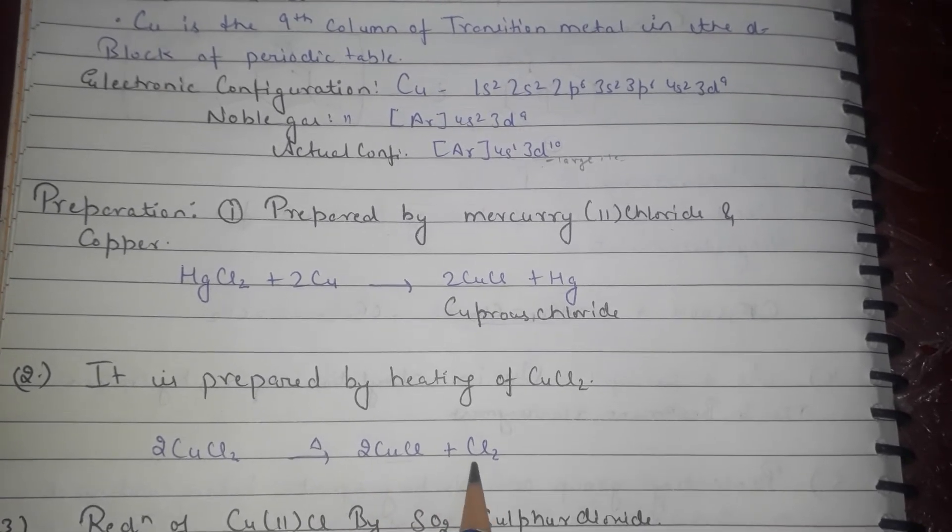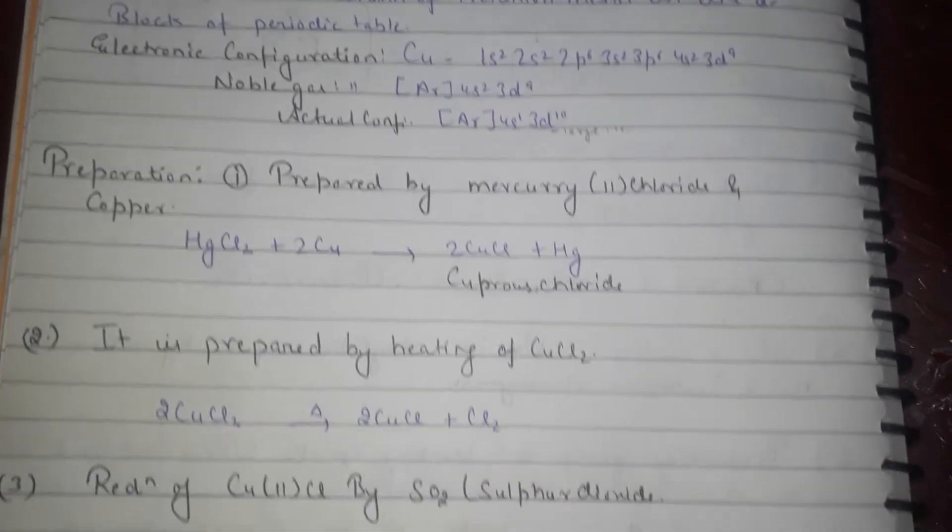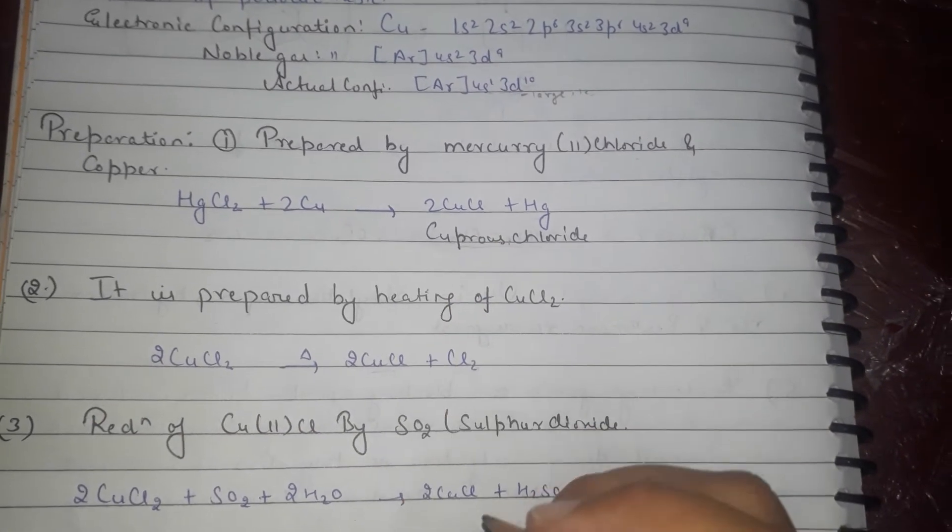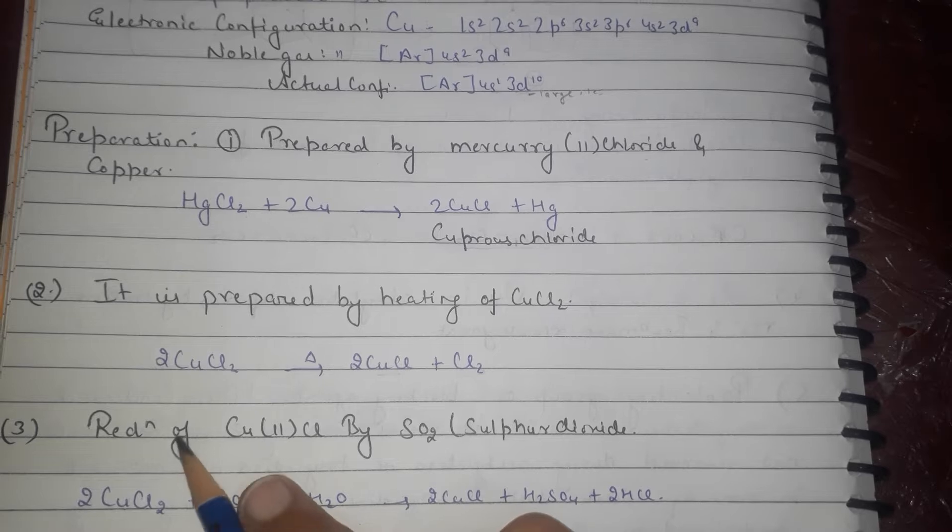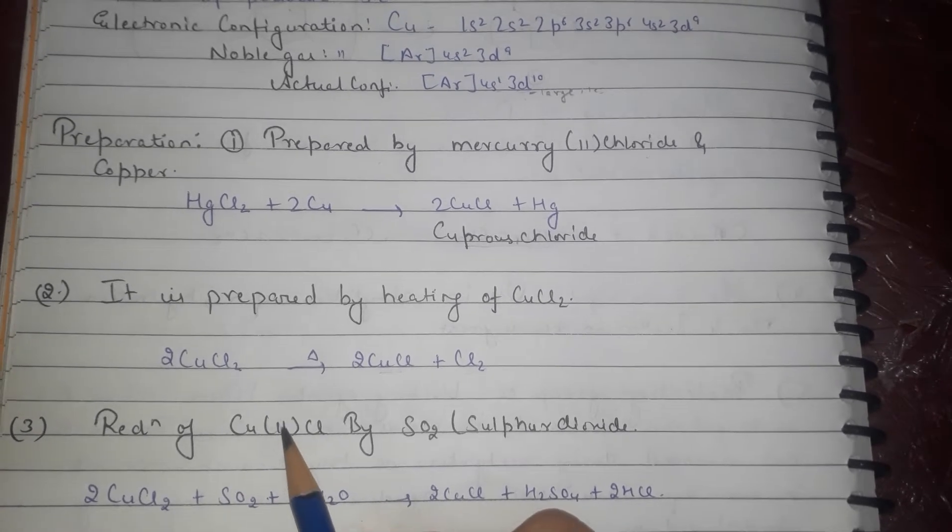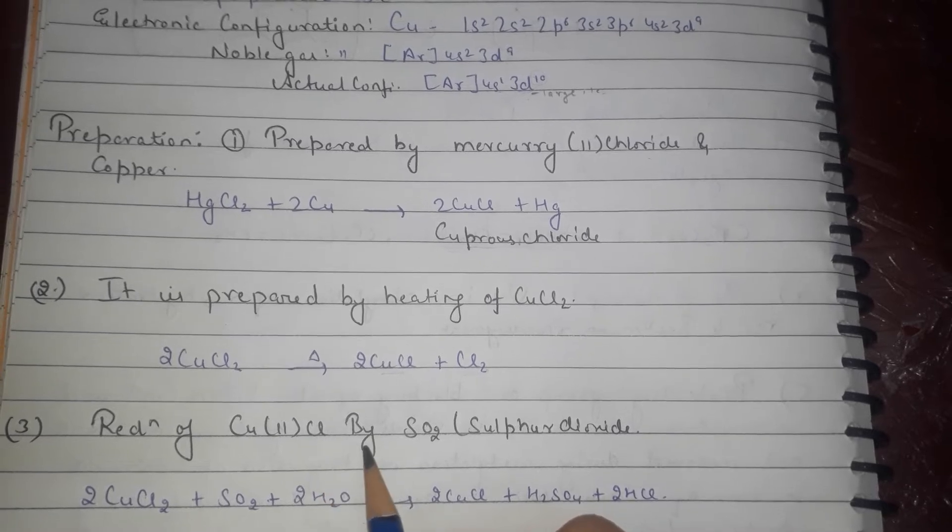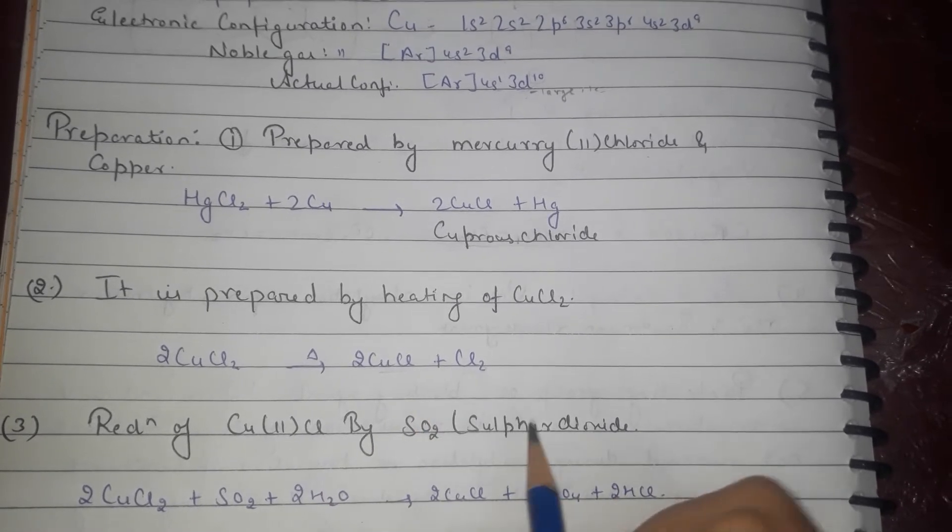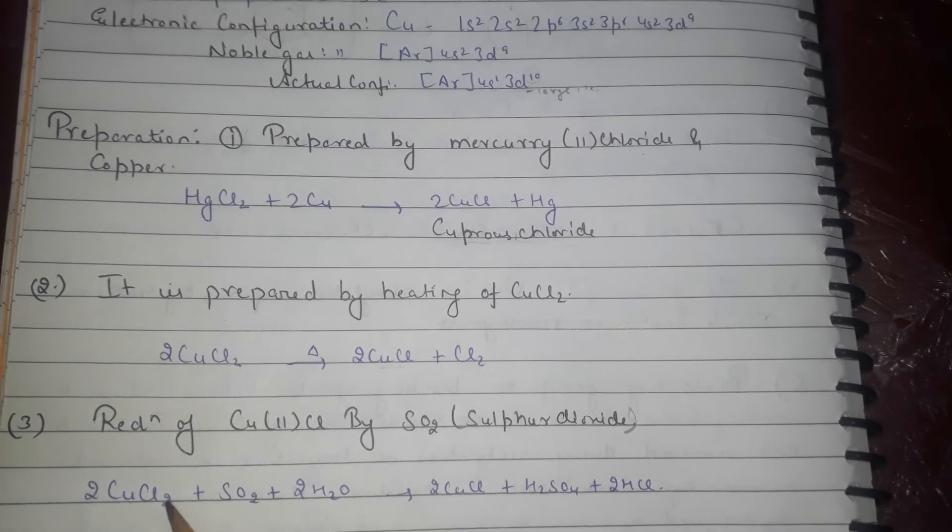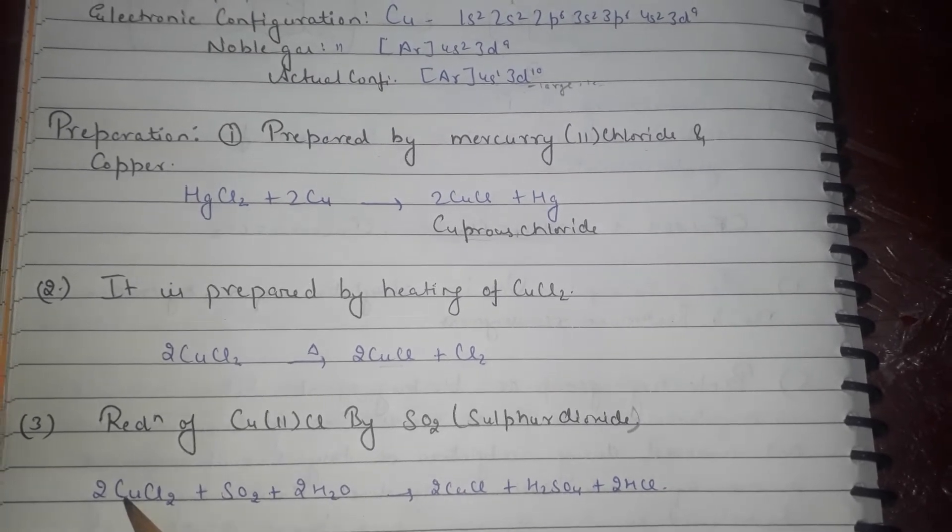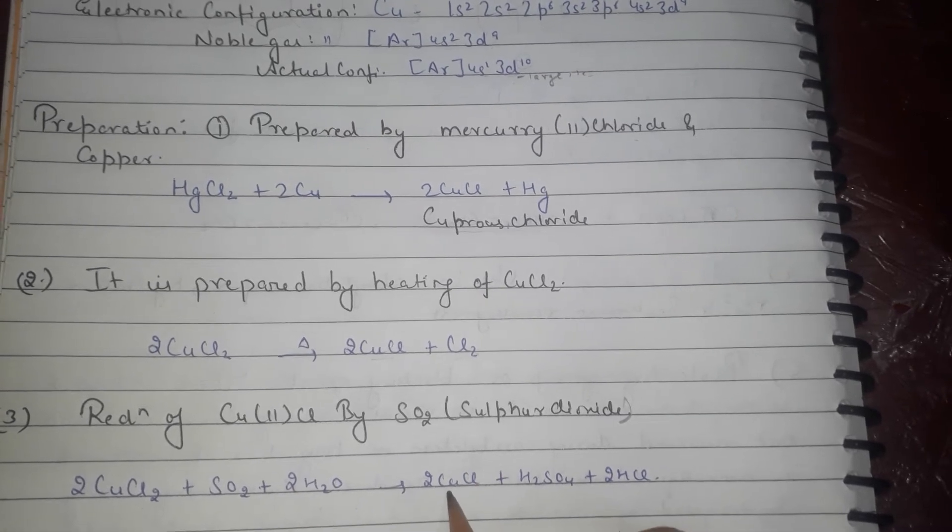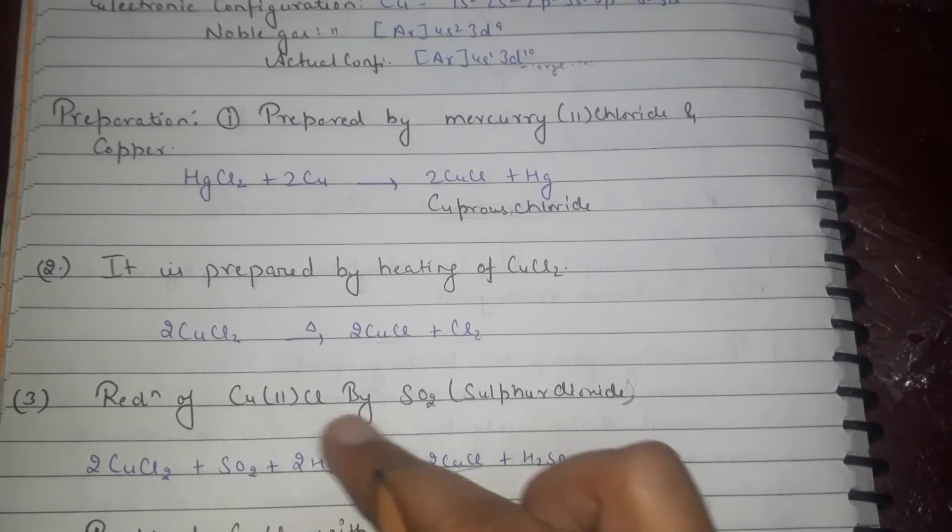Third preparation of cuprous chloride: reduction of copper dichloride by SO2, sulfur dioxide. Reduction of 2CuCl2 plus SO2 plus 2H2O gives cuprous chloride. This is the third preparation.